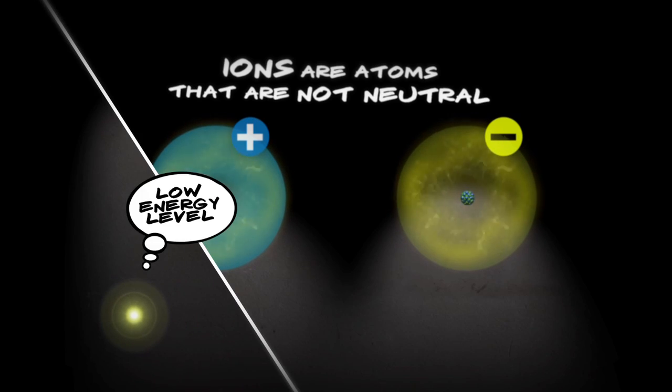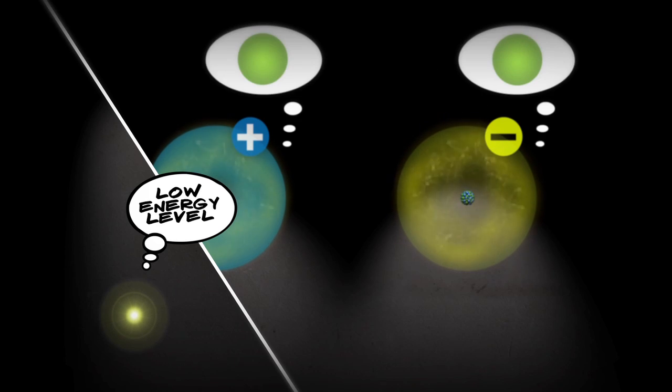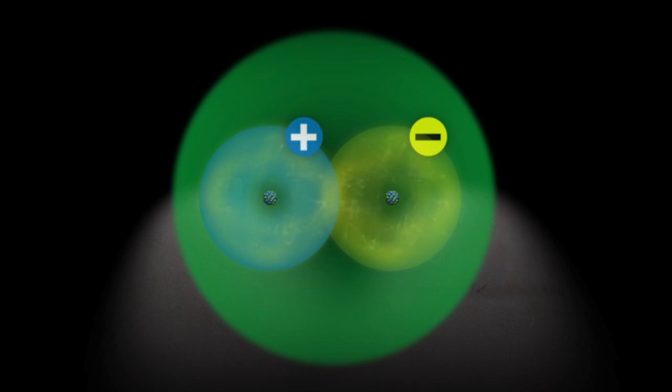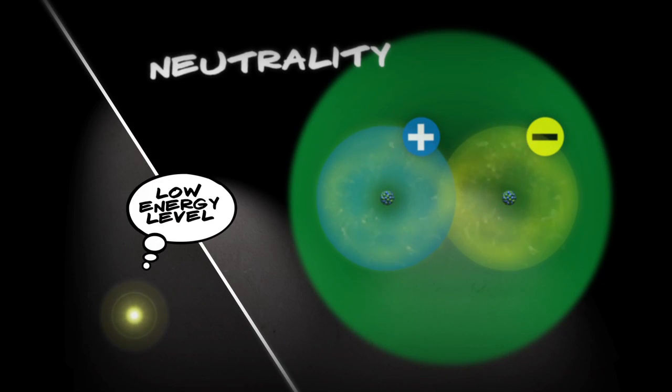So while electrons want a low energy, stress free life to be happy, ions just want to be neutral. And they do this by finding an opposite charge and sticking together. The heart of a battery is electrons and ions trying to achieve happiness.